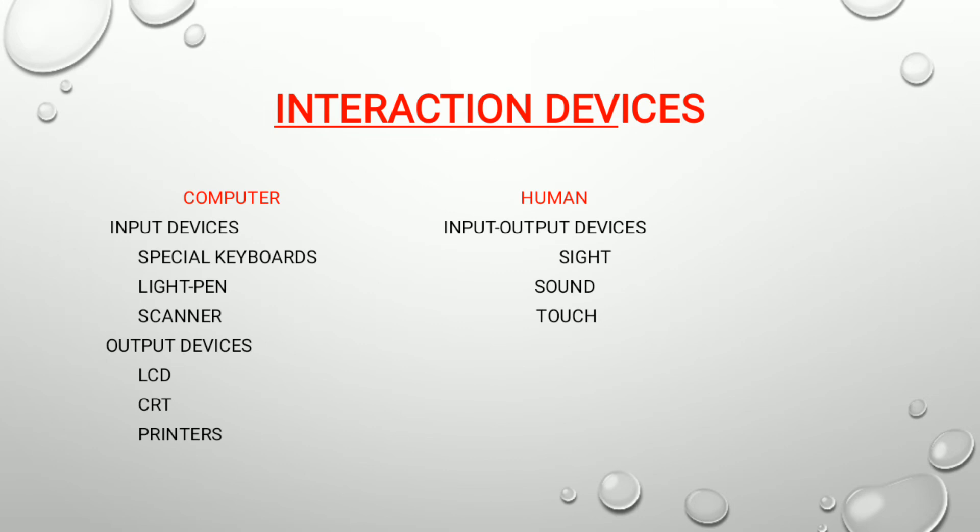Interaction Devices between Computer and Human: Computer input devices include special keyboard, light pen, and scanner. Output devices include LCD, CRT, and printers. For humans, input and output devices include sight, sound, and touch.